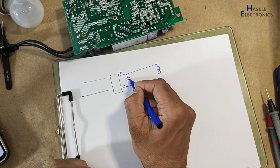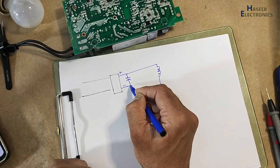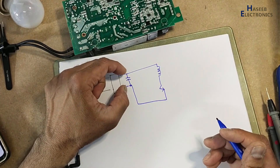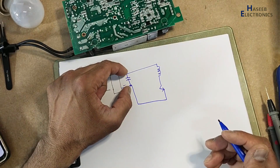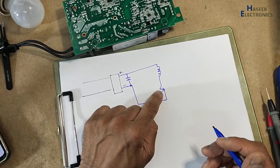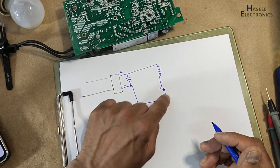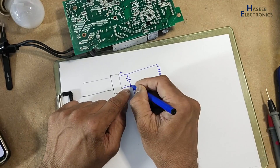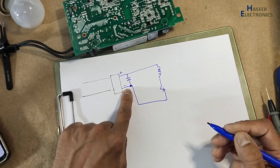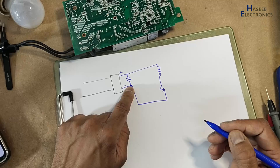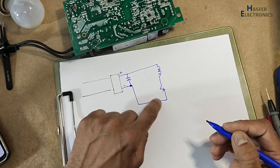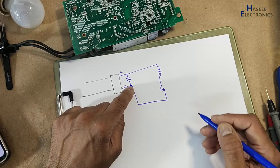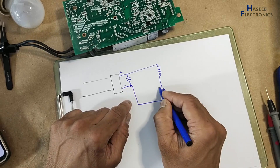If there is a capacitor and we are switching this transistor, current will flow in this circuit. Now this is our one reference point. If we want to test voltage in this circuit, we will use this reference point.